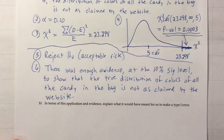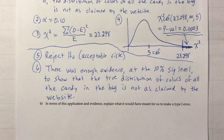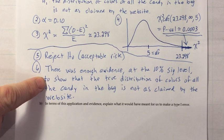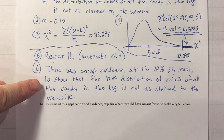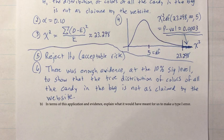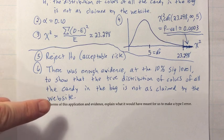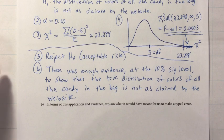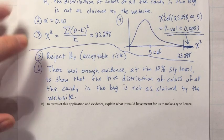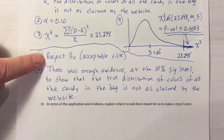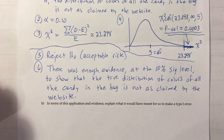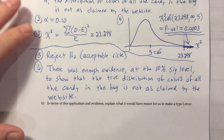Let's look at the last piece: explain what it would have meant for us to make a Type I error. We should start with the definition — a Type I error is rejecting H0 when it is, in fact, true. To reject H0, you need enough evidence. What makes it an error is if the evidence was contrary to the truth. It would be a Type I error if there was enough evidence to show the color mixture was not as claimed, when in fact it really was the same as claimed by the website.